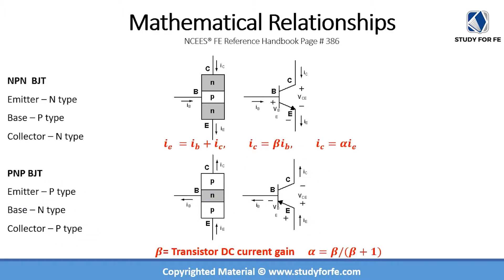For mathematical relationships, it is important to understand how the emitter current, base current, and collector current relate to each other. For an NPN BJT, treating the transistor as a node, the collector current and base current enter the transistor while the emitter current leaves. So the emitter current IE equals the sum of the base current IB and collector current IC. This equation is true for PNP as well.